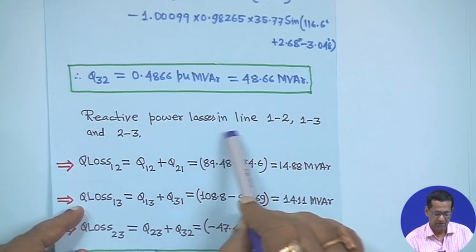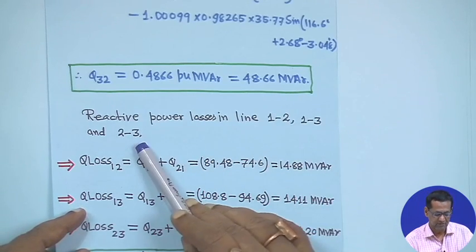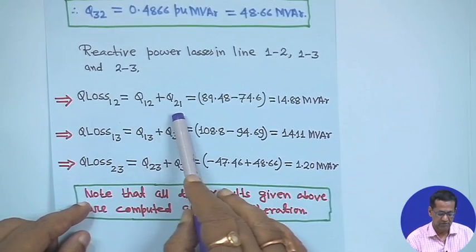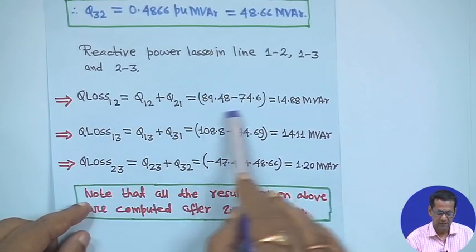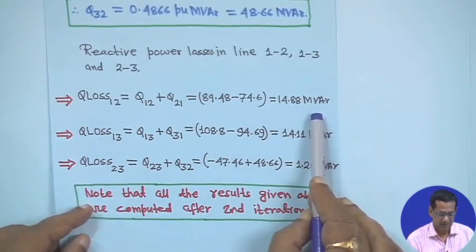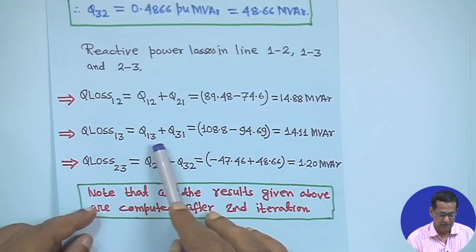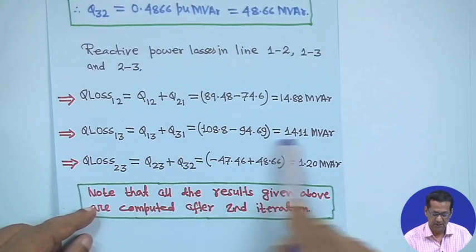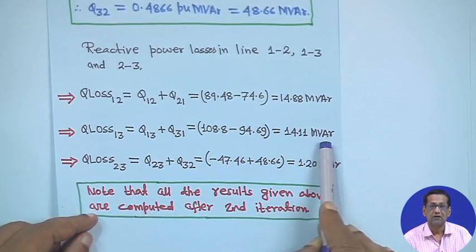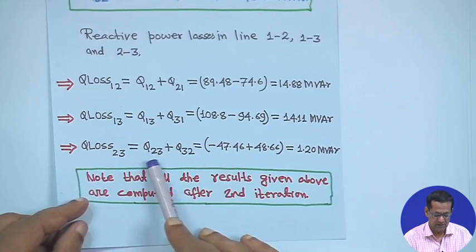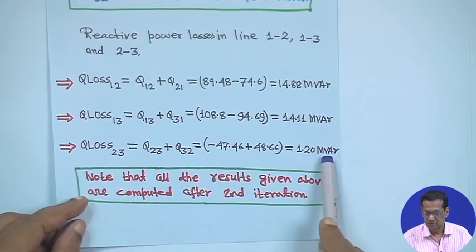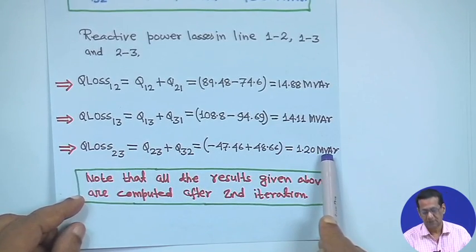Reactive power losses in lines 1-2, 1-3, and 2-3: Q_loss₁₂ is Q₁₂ plus Q₂₁, giving 14.88 megawatt. Q_loss₁₃ is Q₁₃ plus Q₃₁, giving 14.11 megawatt. Q_loss₂₃ is Q₂₃ plus Q₃₂, giving 1.20 megawatt.